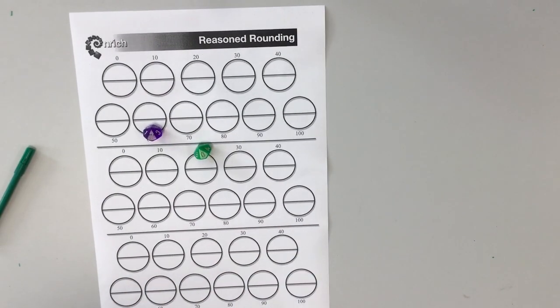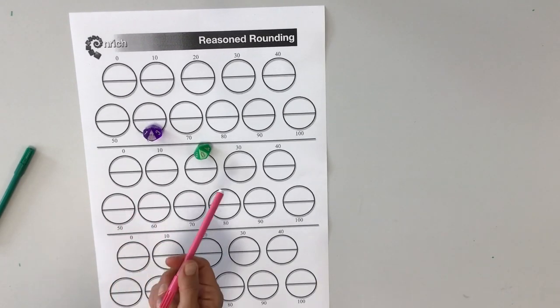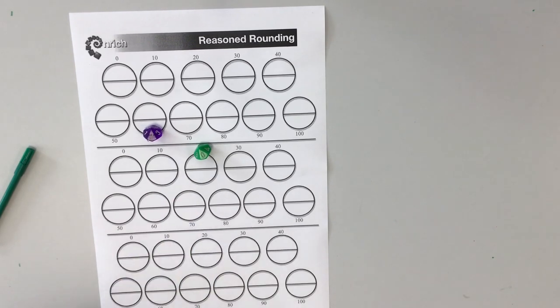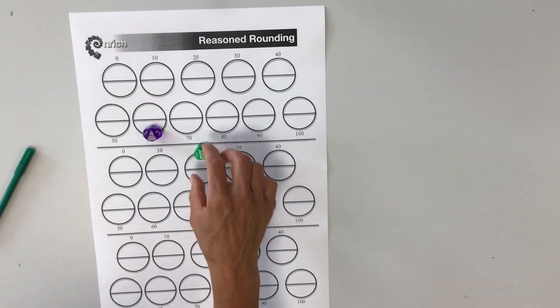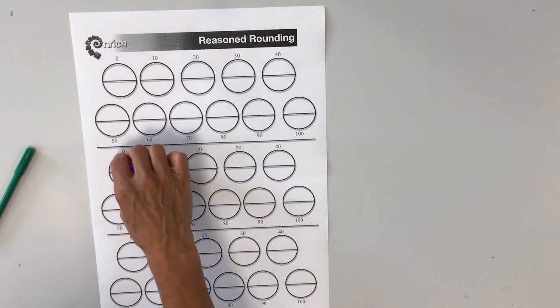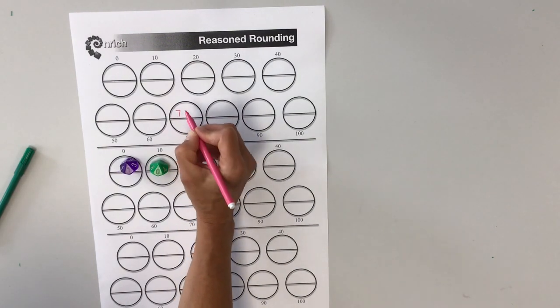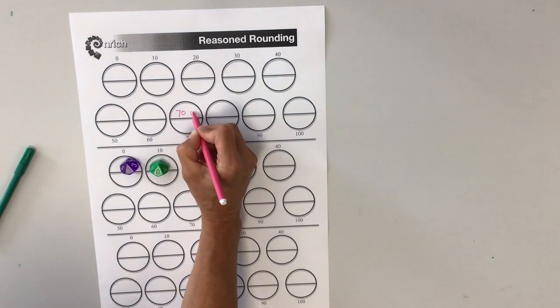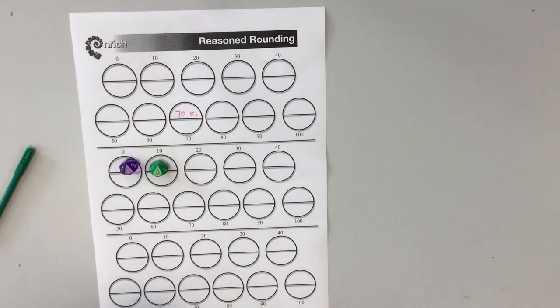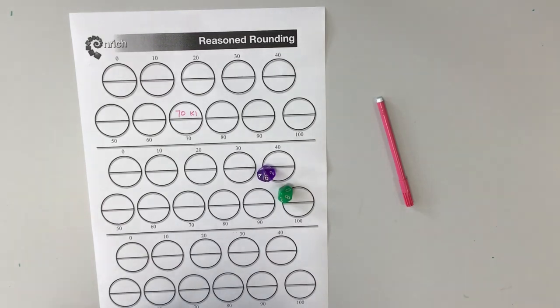I'm going to go first and I've rolled my dice and I have got a 7 and a 0. So I could use this as 70 or I could use this as 7. I'm actually going to use this as 70. So I am going to write the number in here. This one doesn't need any rounding. And make that half of my circle.